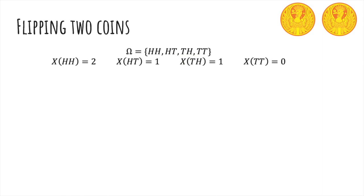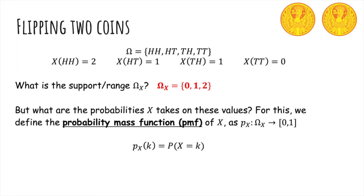So now we're going to see this example again of flipping two coins. We already defined X of the outcomes. What is the support or range? It's actually just zero, one, or two because those are the only values X can take on.